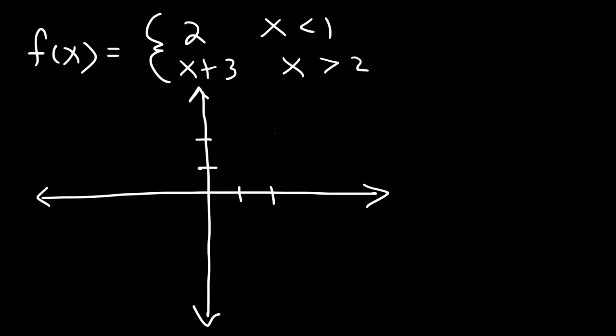We're going to have an open circle at 1 comma 2 because it's less than 1, not equal to 1. And because it's just a constant, it's going to be a horizontal line, but less than 1, so we've got to graph it to the left.